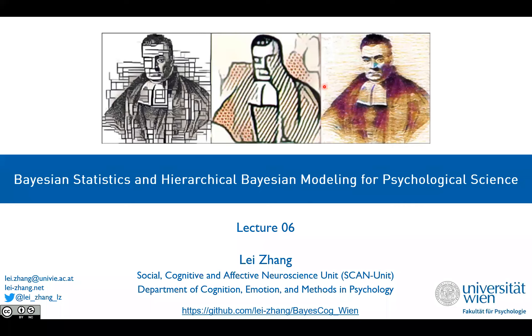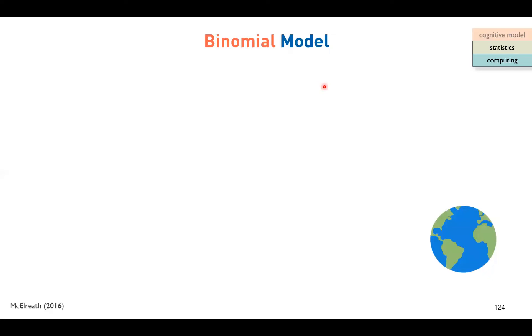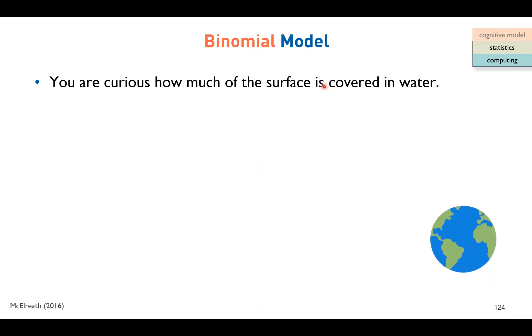Good morning everyone, welcome back. Today we will have the sixth lecture about this Bayesian workshop. As usual, we will have a Bayesian warm-up. The last time we replaced A and B in the Bayesian equation with theta and data. Theta is the unknown parameter we're interested in, and the data is what we collect from experiments or observations. We turned to the concrete example of globe tossing, using a binomial example to illustrate how Bayesian updating works conceptually.